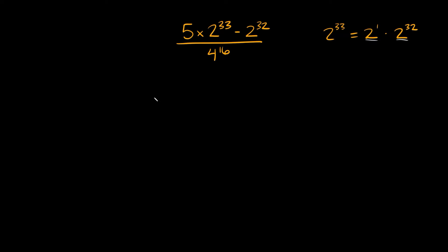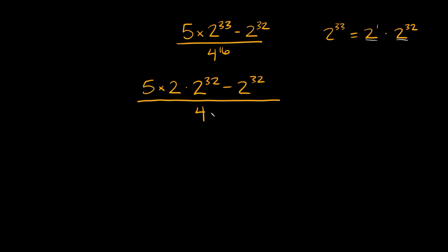So let's rewrite what we have up here. We're going to write 2 to the 33rd as 2 to the first power — which is just 2 — times 2 raised to the 32nd power. So the numerator becomes: 5 times 2 times 2 raised to the 32nd power, minus 2 raised to the 32nd power, all over 4 raised to the 16th.